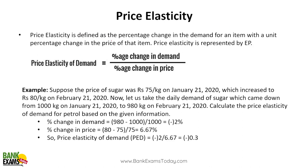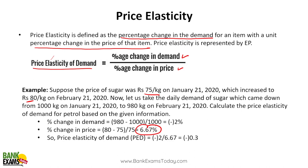Price elasticity of demand is defined as percentage change in the demand for an item with a unit of percentage change in price. For example, the price of sugar is 75 rupees per kg on 21st of January. It increases to 80 rupees. The change in demand has fallen from 1000 kg to 980 kg. So the demand fell by 2%. The price elasticity of demand comes out to be minus 0.3. That is the price elasticity of demand — you can calculate that as well.